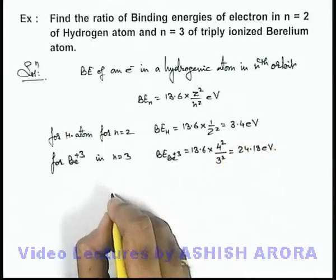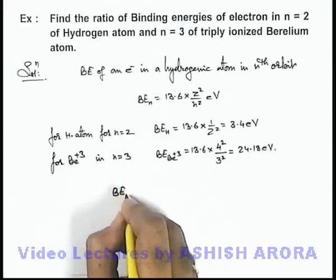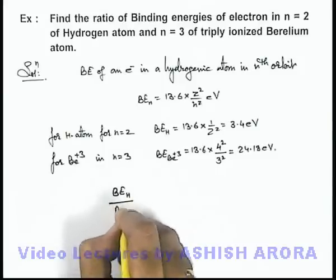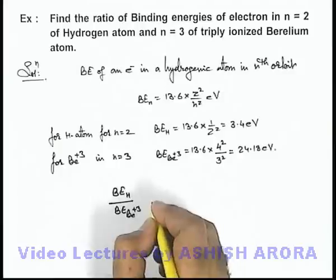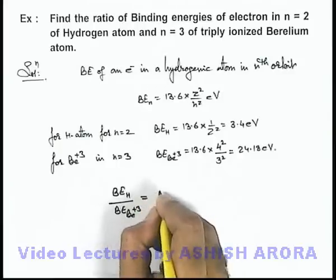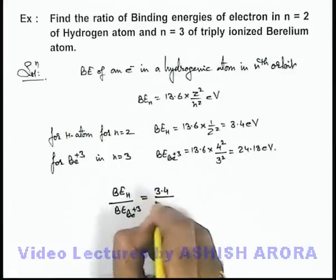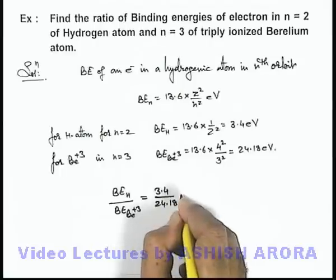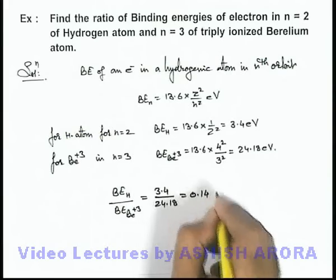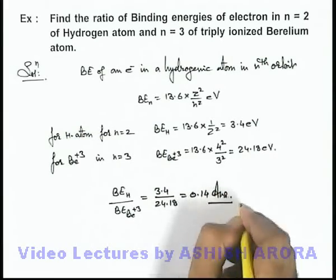If we calculate the ratio of binding energy of hydrogen in n = 2 to binding energy of beryllium³⁺ in n = 3, this can be written as 3.4/24.18. On simplifying, we get 0.4, which is the answer to this problem.